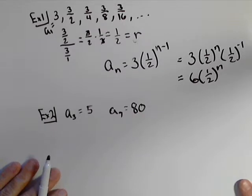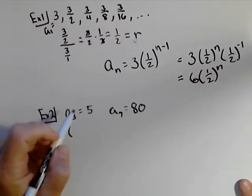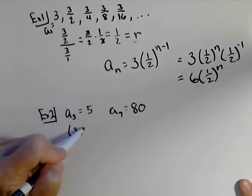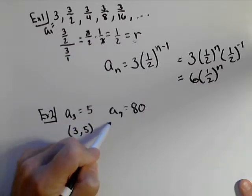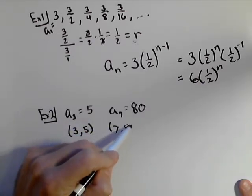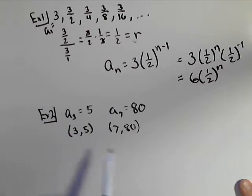Now if all we're given is two points, we can think of these as if they were exactly that. Points three comma five and seven comma eighty. So we want the exponential function going through these two points. So we can actually create a function for both.